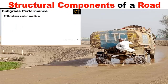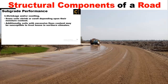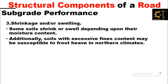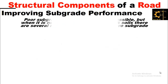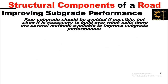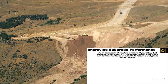The third performance criterion is shrinkage or swelling. Some soils shrink or swell depending upon their moisture content. Additionally, soils with excessive fines content may be susceptible to frost heave in northern climates. Shrinkage or swelling and frost heave will tend to deform and crack any pavement type constructed over them. Now, how can we improve subgrade performance?